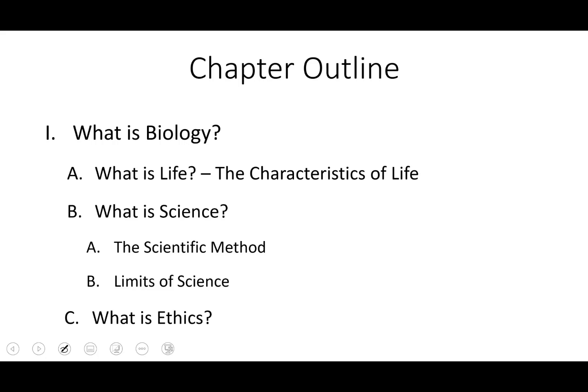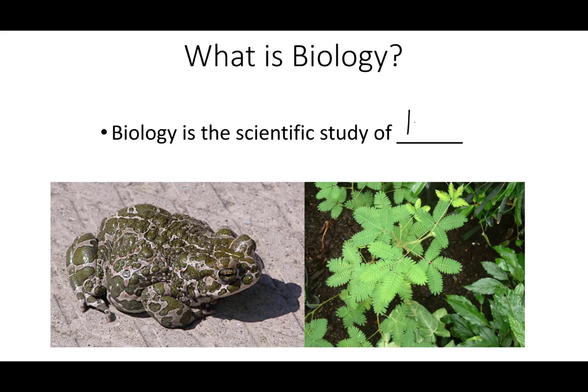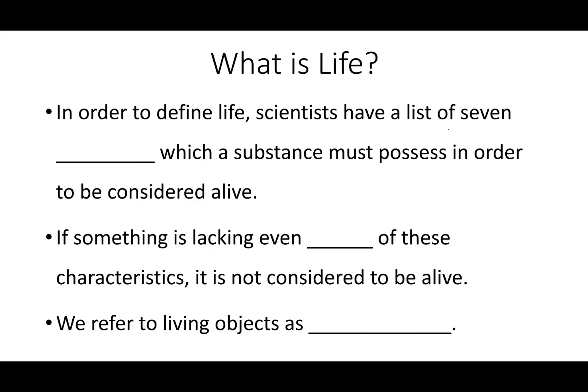Biology is the scientific study of life. In order to define life, scientists have a list of seven criteria which a substance must have in order to be considered alive. If something is lacking even one of these characteristics, it is not considered to be alive. We refer to living objects as organisms — things that have all of the characteristics of life.